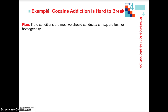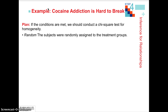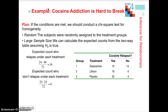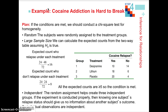The next step after state is the plan. If conditions are met, we'll conduct a chi-square test for homogeneity, because our null hypothesis is that all proportions are the same and our alternative is that at least one is different. Subjects were assigned randomly to the different treatment groups. For the large sample size condition, we calculate the expected counts for each of the six groups and make sure they are all at least five.